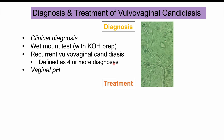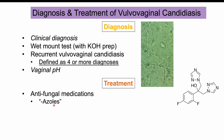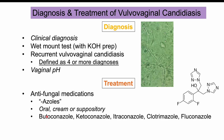Treatment involves antifungal medications, often available over-the-counter. These are the azoles — named with azole as a suffix — which inhibit ergosterol synthesis. Ergosterol is a critical part of the candida cell membrane, so inhibiting its synthesis prevents effective reproduction. These medications come in oral, cream, or suppository formulations and include butoconazole, ketoconazole, itraconazole, clotrimazole, and fluconazole.